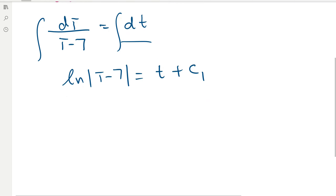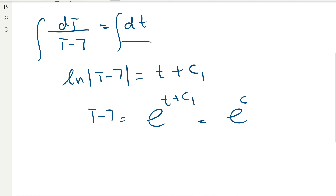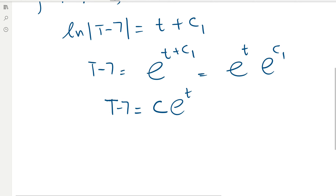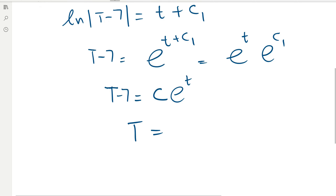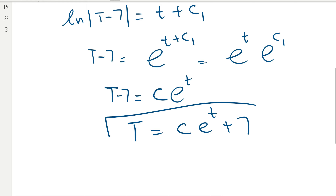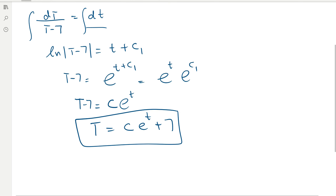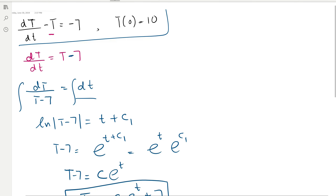To find the explicit solution, we exponentiate both sides: T − 7 = e^(t + c₁), which we can write as e^(c₁) · e^t. Since e^(c₁) is an arbitrary constant, we replace it with C. Moving the −7 to the right, the explicit solution is T = C·e^t + 7.